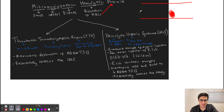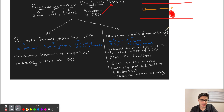Now if a red blood cell is passing through this microthrombi, it can get damaged or sheared. This can result in breakdown of red blood cells because now they're damaged, and we can have an increase in turnover of these red blood cells as a result. This can lead to anemia and can also cause a pathological finding known as a schistocyte, which is a finding we will see when the red blood cells are sheared.